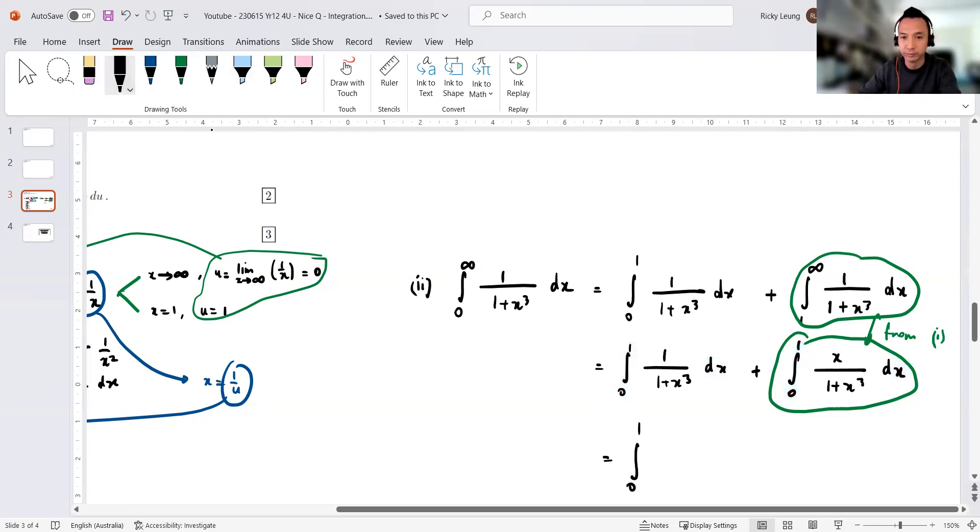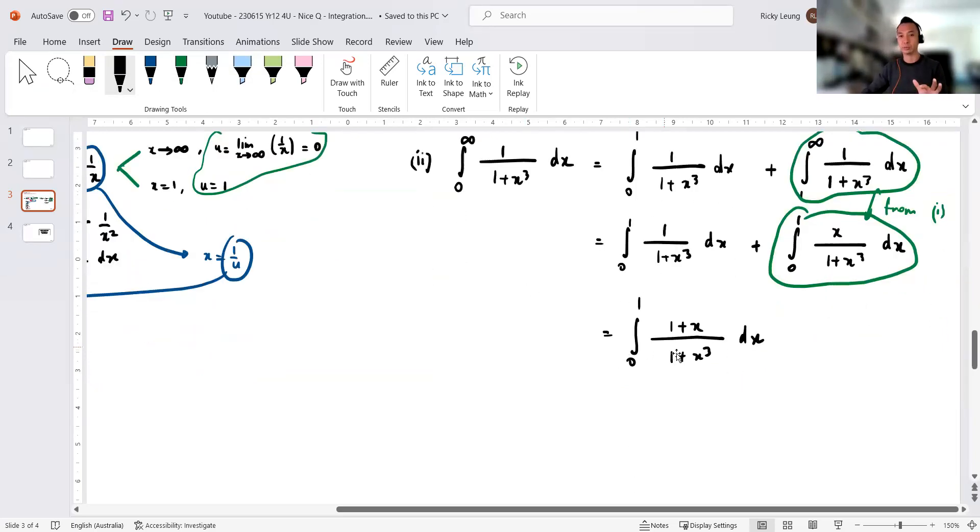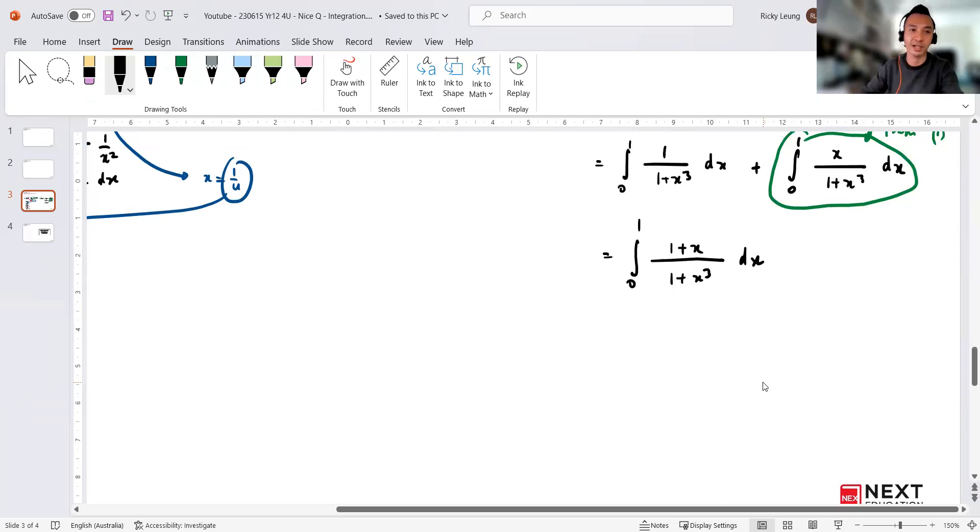Now when all the limits are the same and they're both dx's, I'm going to combine them. Let's put them back together as one integral from zero to one, and then common denominator becomes 1 plus x over 1 plus x cubed dx.